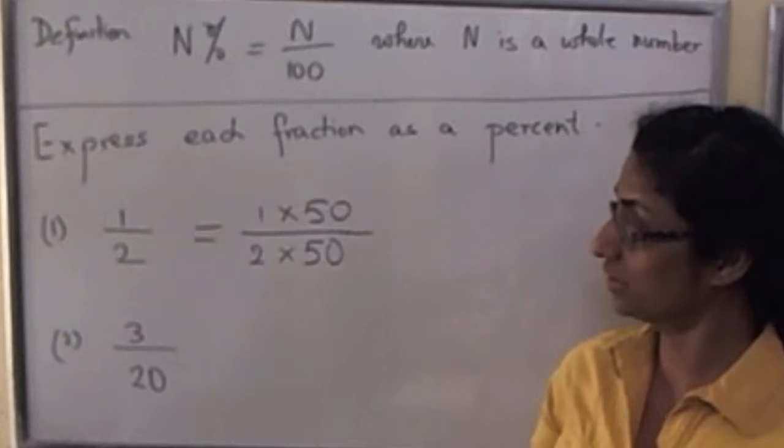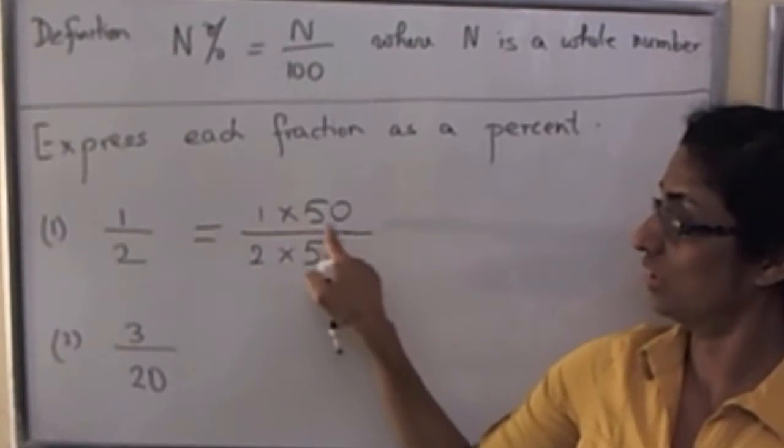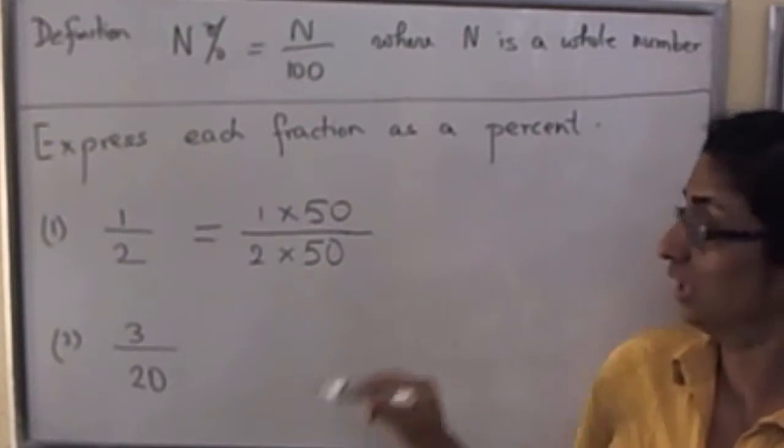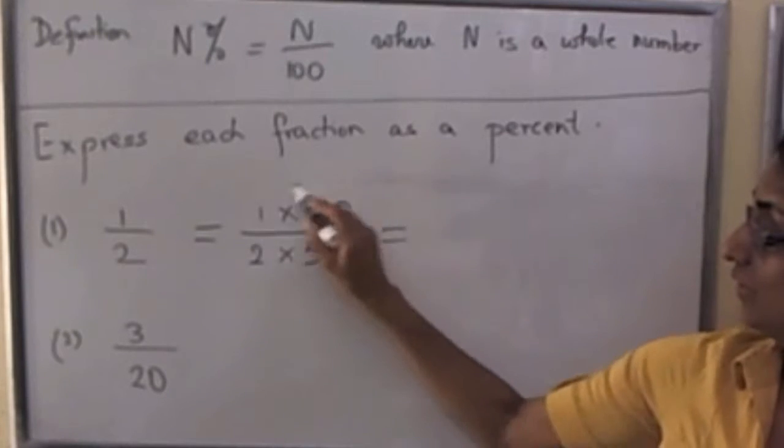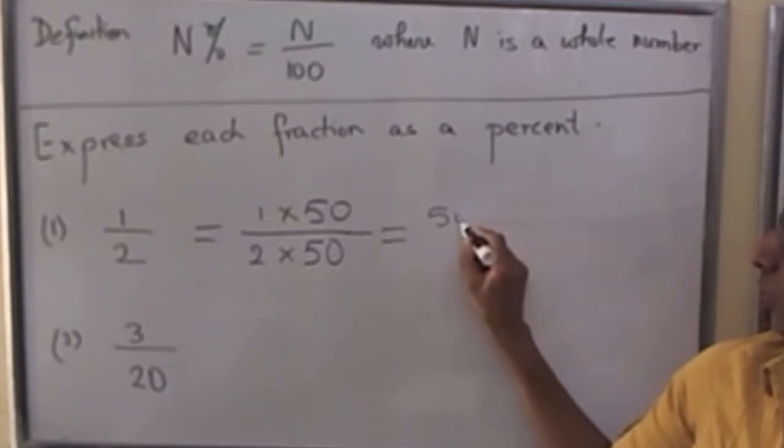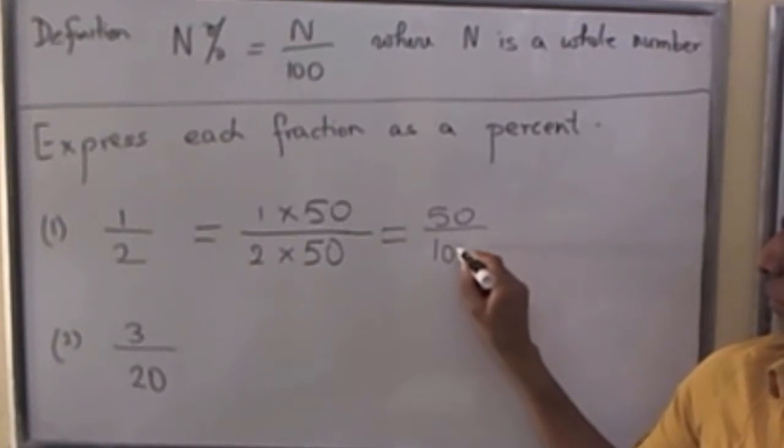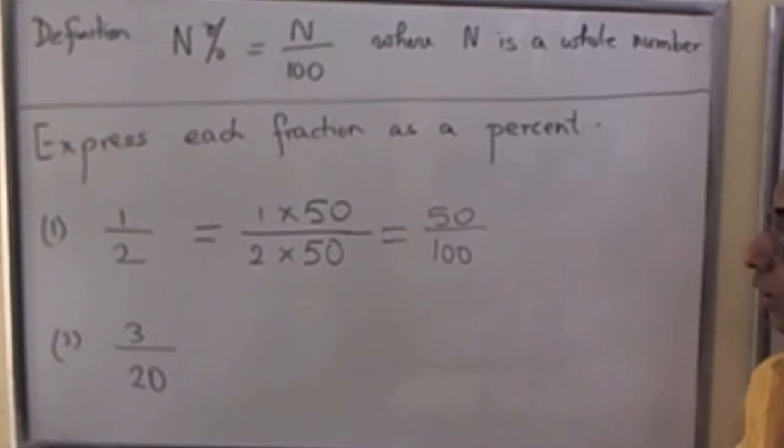So FFEF tells us 1 half equals 1 times 50 over 2 times 50. And now we write this as 50 over 100 because 2 times 50 is 100, and now we are in good shape.